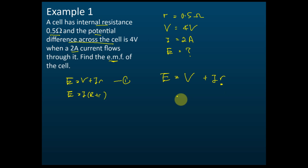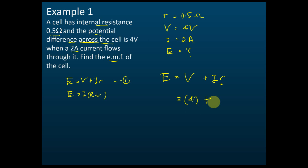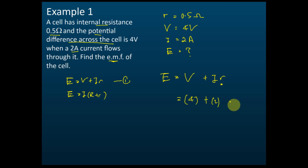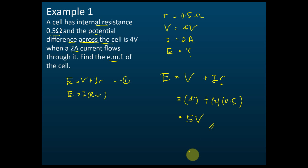Now plug in the values: V equals 4 volts, current i equals 2 amperes, internal resistance r equals 0.5 ohm. So E equals 4 plus 2 times 0.5, which gives E equals 5. The unit of EMF is volts.